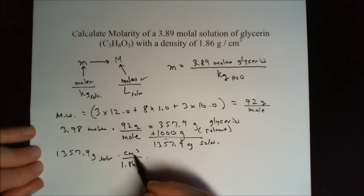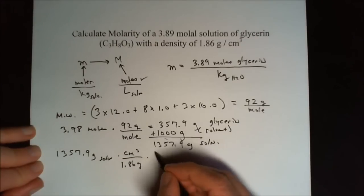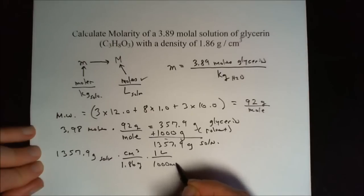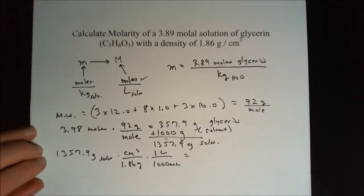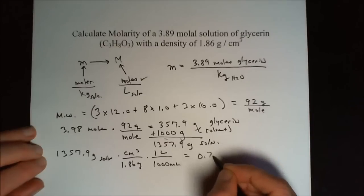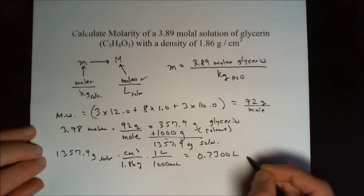Remember we want this in liters. This will give us milliliters. Recalling that a milliliter is a cubic centimeter, there is 1 liter per 1,000 milliliters. That gets us into liters. We put that in our calculator and get 0.7300 liters of solution.